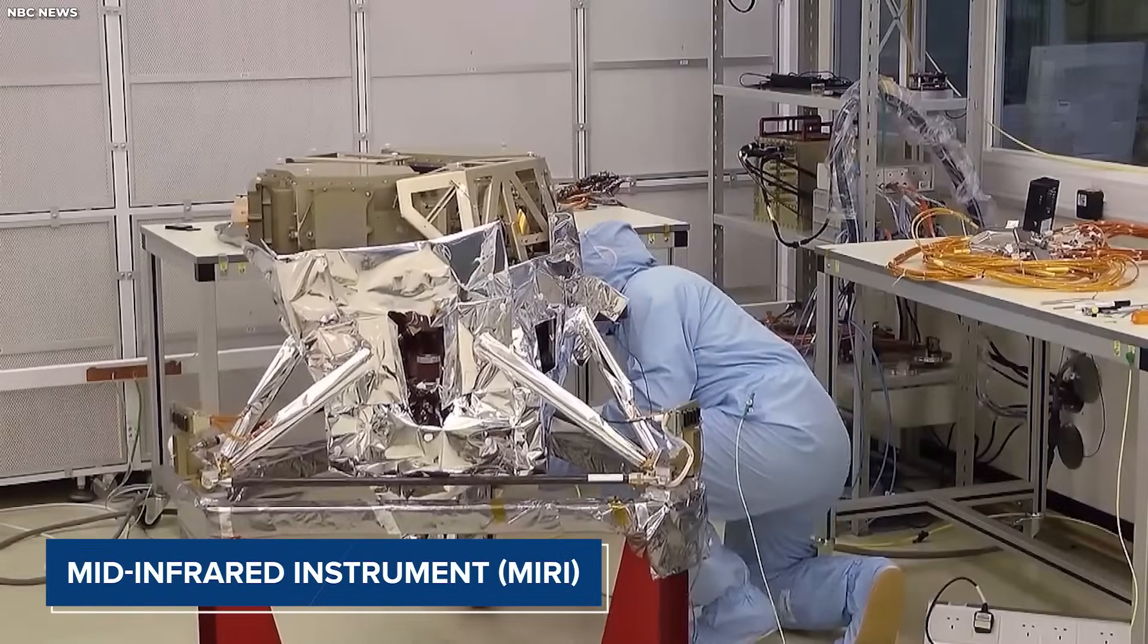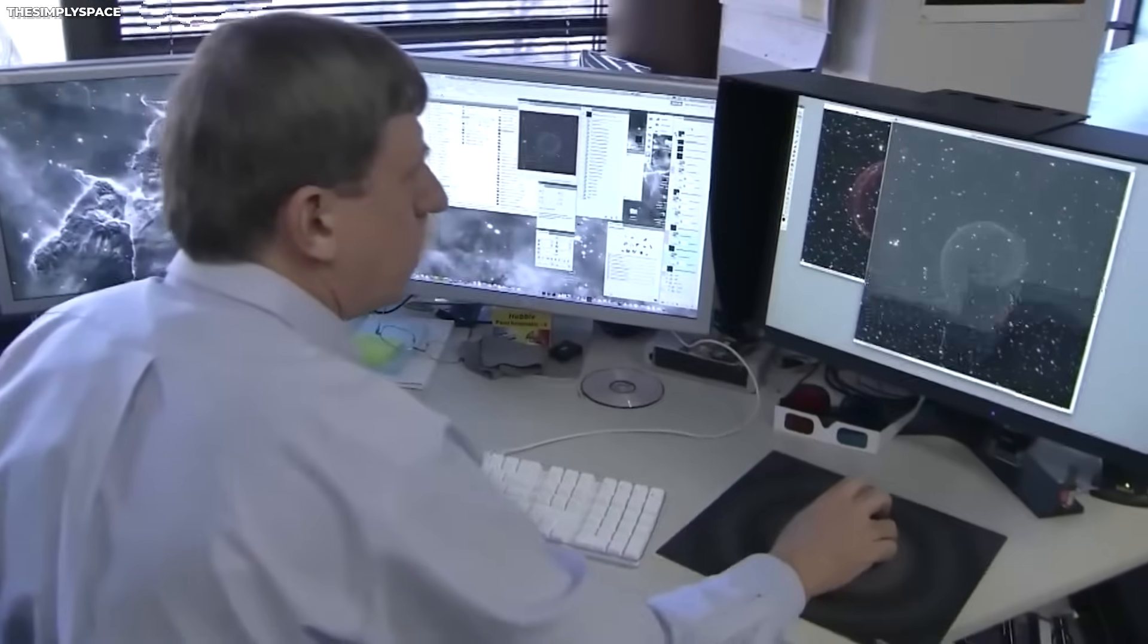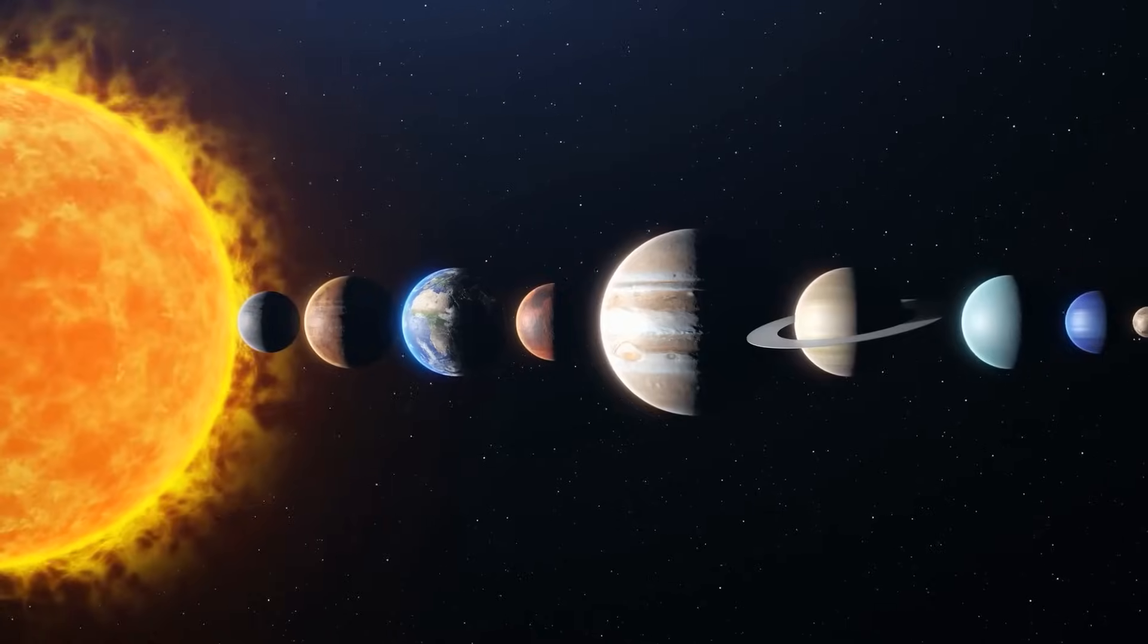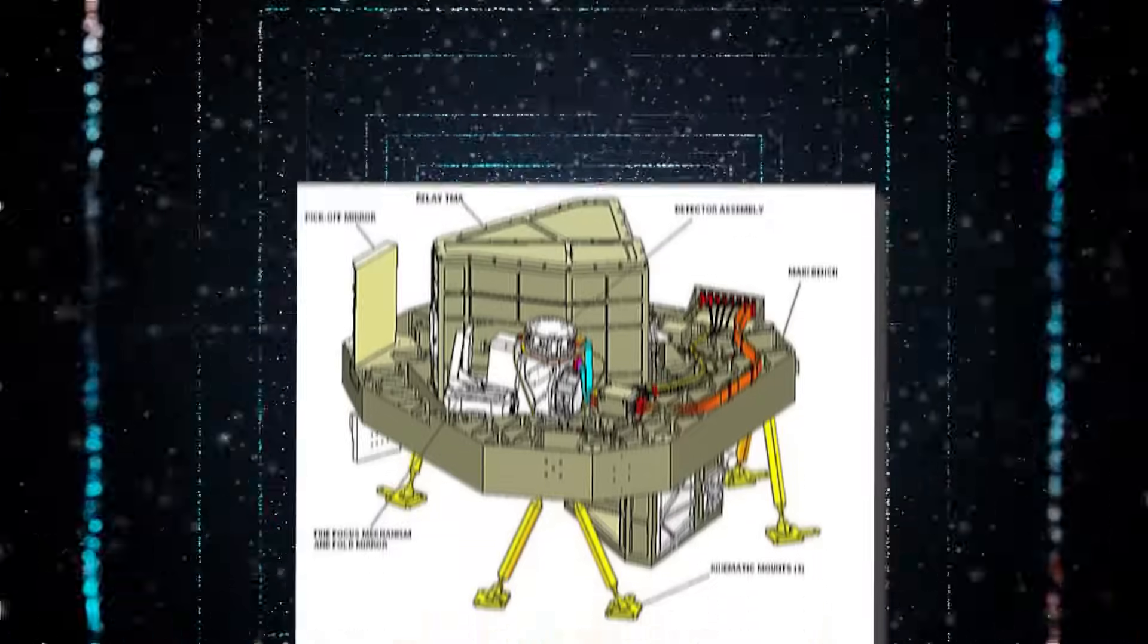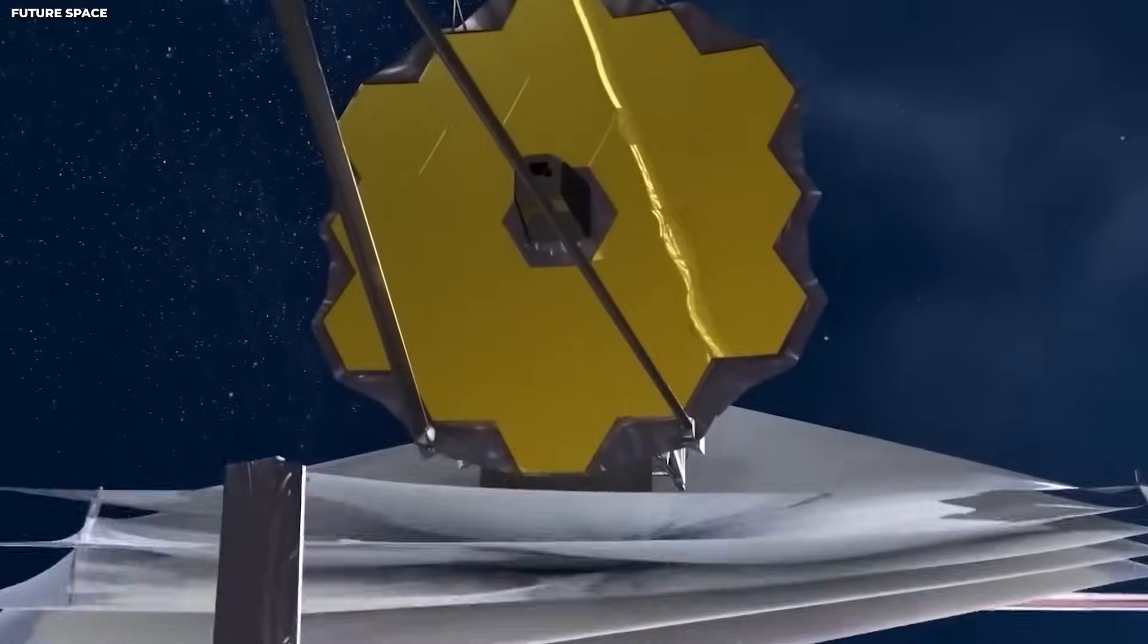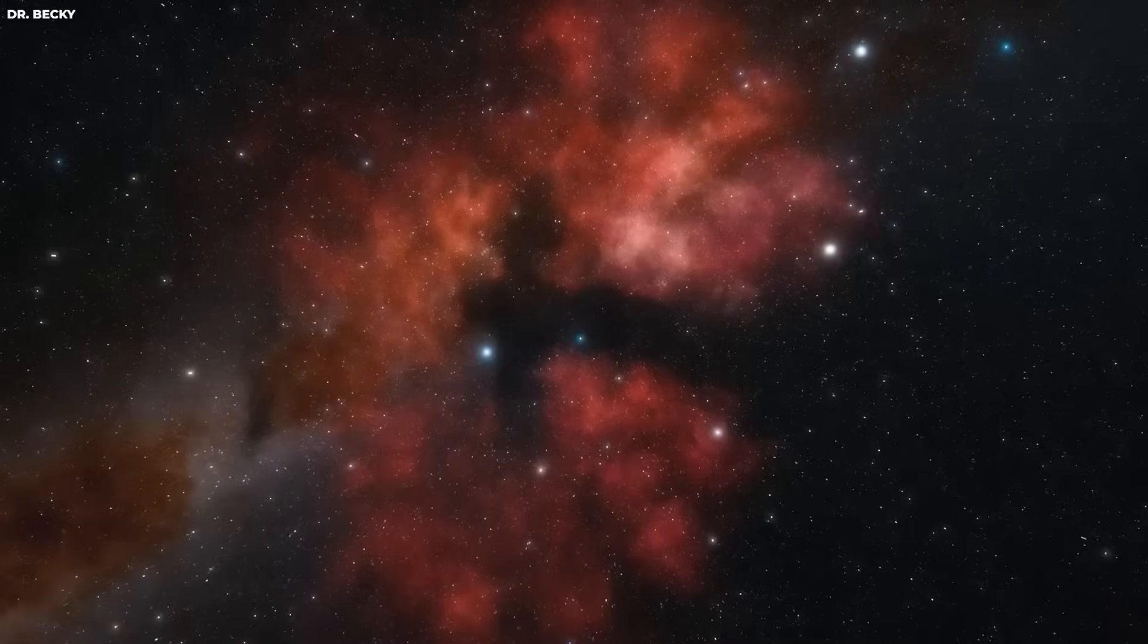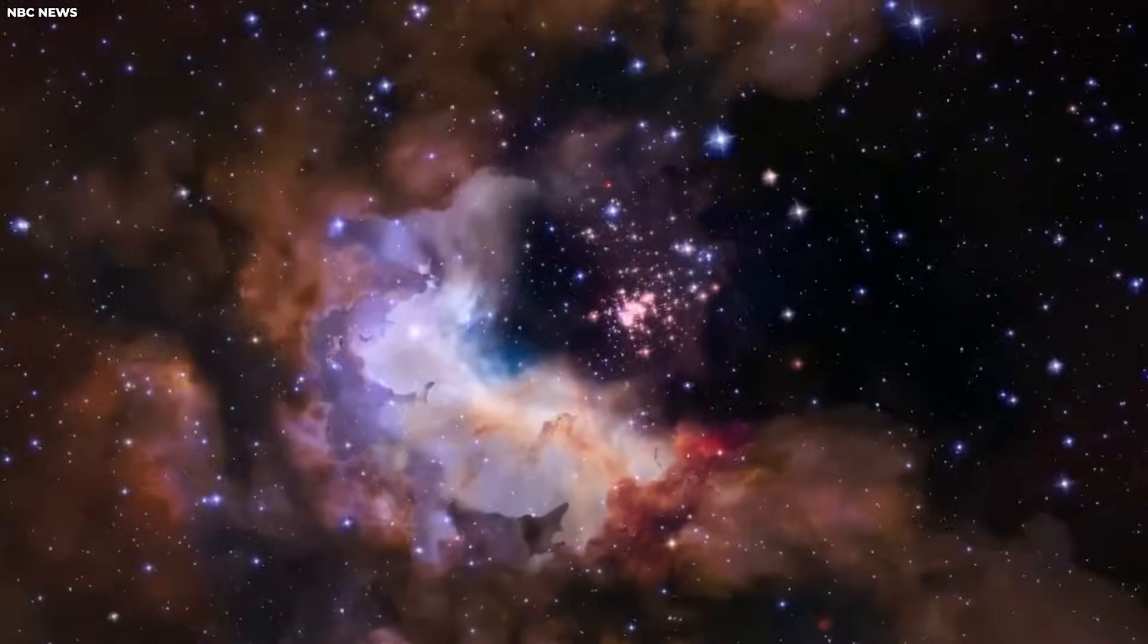The mid-infrared instrument, MIRI, is another vital component of the JWST, designed to capture infrared light and investigate a wide range of astronomical phenomena. From studying the early universe to exploring exoplanets and our own solar system, MIRI provides valuable insights. Additionally, the fine guidance sensor, near-infrared imager and slitless spectrograph, FGS NIRCAM, play a crucial role in the precise pointing and tracking of celestial objects, ensuring that the telescope remains accurately aligned with its target objects.